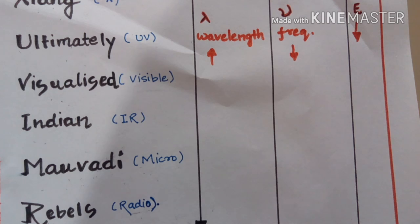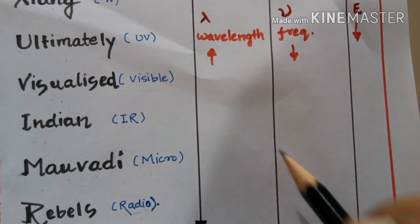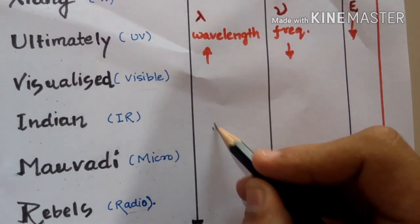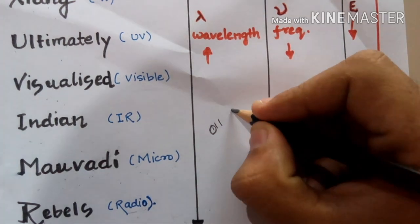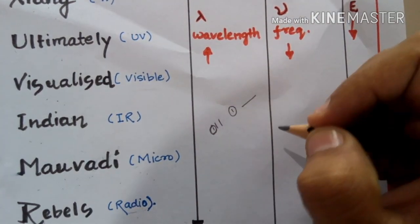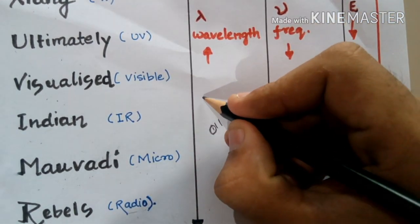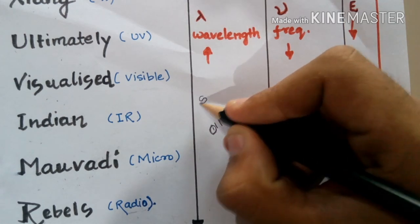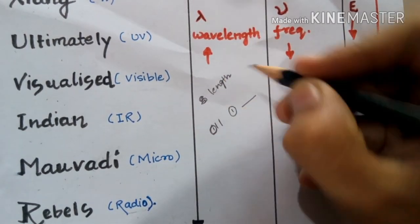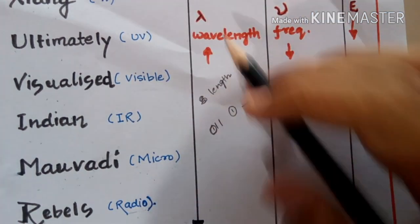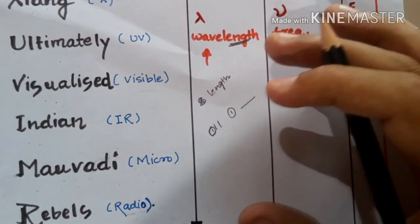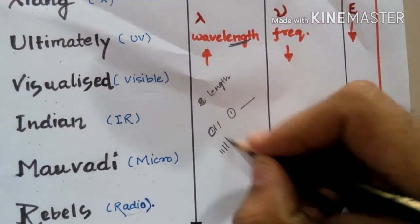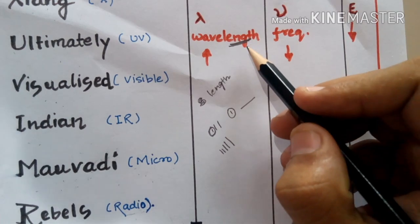The waves are arranged in increasing order of wavelength — the smallest first, then larger ones, like a morning assembly line where students stand in increasing order of height. In this particular series, all these electromagnetic waves are arranged in increasing order of wavelength, represented by the symbol lambda.